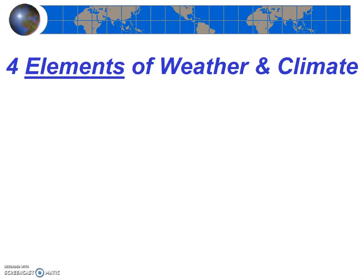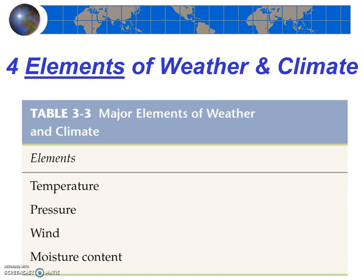Several weeks ago we began our study of weather and climate. In chapter 3 of the textbook we learned the four elements of weather and climate — you should be able to easily list them from memory. Since then we have covered all four elements. We covered temperature in weeks 6 and 7 when we covered chapter 4 material, and we covered chapter 5 material in week 8.